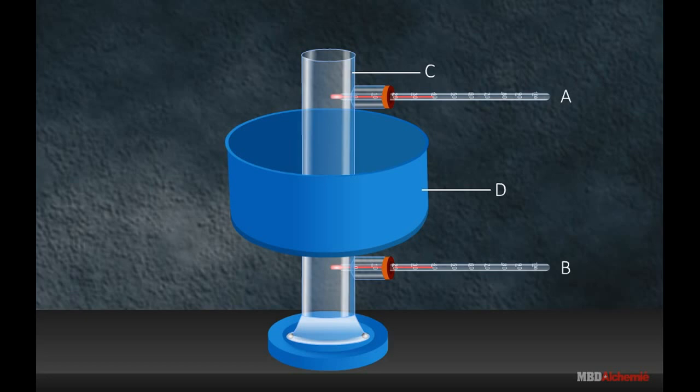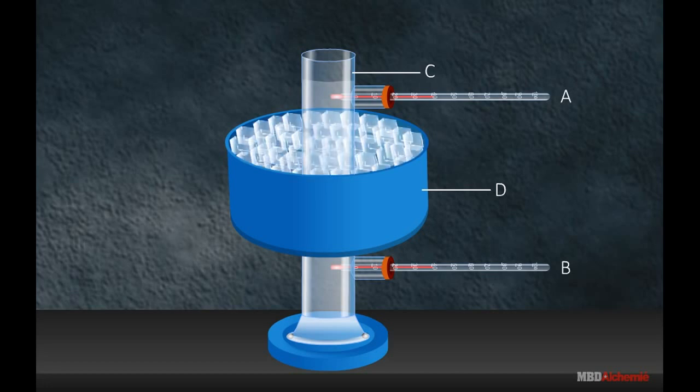Fill the cylinder C with water at room temperature and the annular trough D with freezing mixture of ice and common salt.